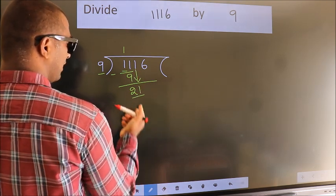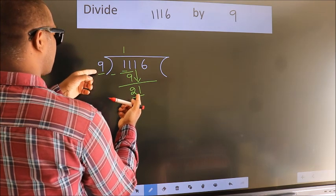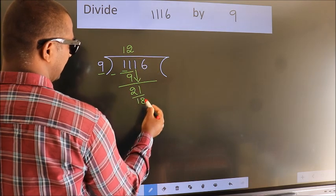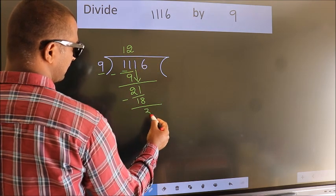So 21. A number close to 21 in 9 table is 9 twos, 18. Now we subtract. We get 3.